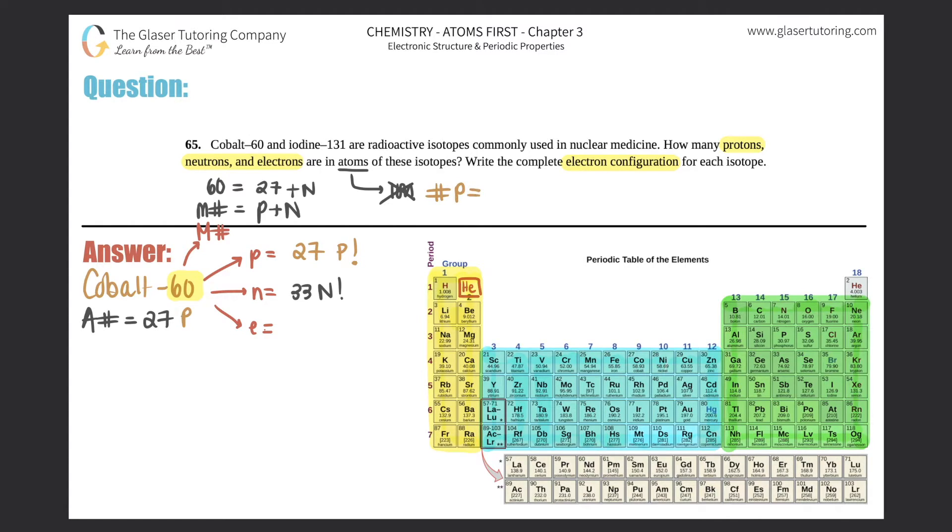So technically, the number of protons should equal the number of electrons, because an atom will always be neutral. So the positives have to cancel out with the negatives. So if there was 27 protons, there should be 27 electrons. And that answers the first part.